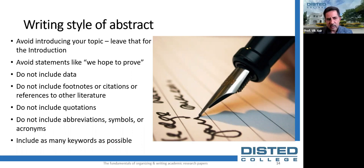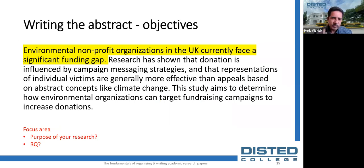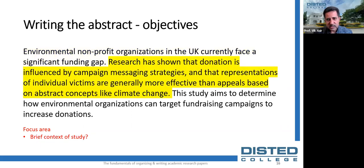In this example of an abstract, you can start by clearly defining the purpose and aim of your research — what practical or theoretical problem does the research respond to, or what research question did you aim to answer? You can also include some brief context on the social or academic relevance of your topic. Don't get into too detailed background information — your aim is not to provide so much information, just enough as a teaser.